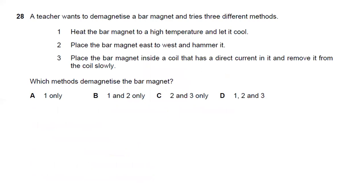Question twenty-eight: a teacher tries three methods to demagnetize a bar magnet: (1) heating it to a high temperature and letting it cool, (2) placing it east-west and hammering it, (3) placing it inside a coil with DC current and removing it slowly. Methods 1 and 2 demagnetize; method 3 with DC does not. Answer B is the best choice.